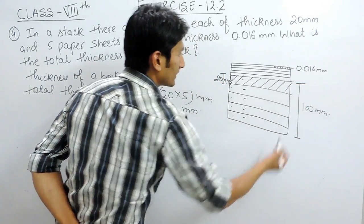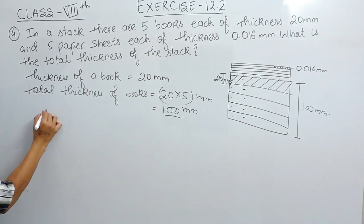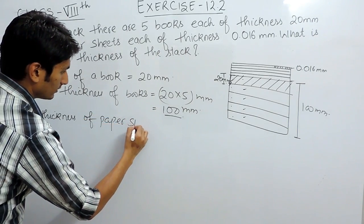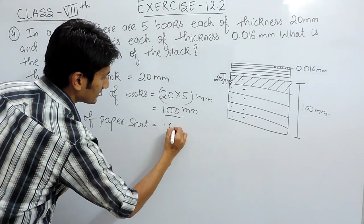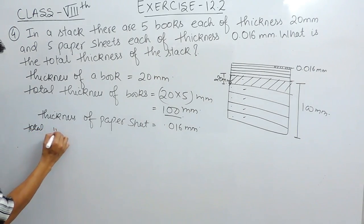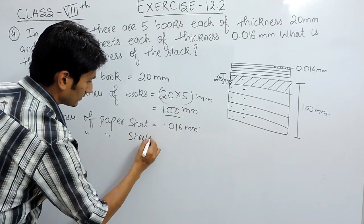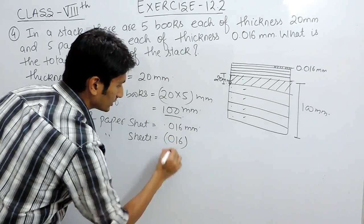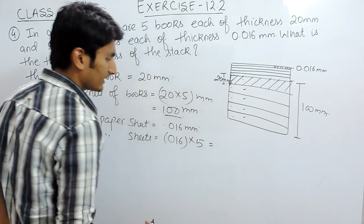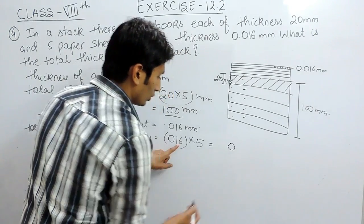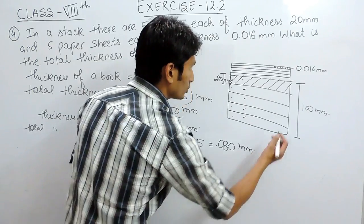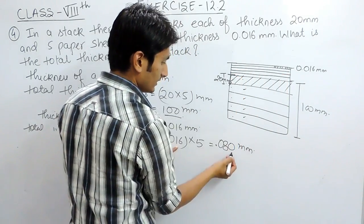Now let's find the thickness of the paper sheets. The thickness of one paper sheet is 0.016 mm. So the total thickness of the 5 paper sheets is 0.016 multiplied by 5, which equals 0.080 mm.